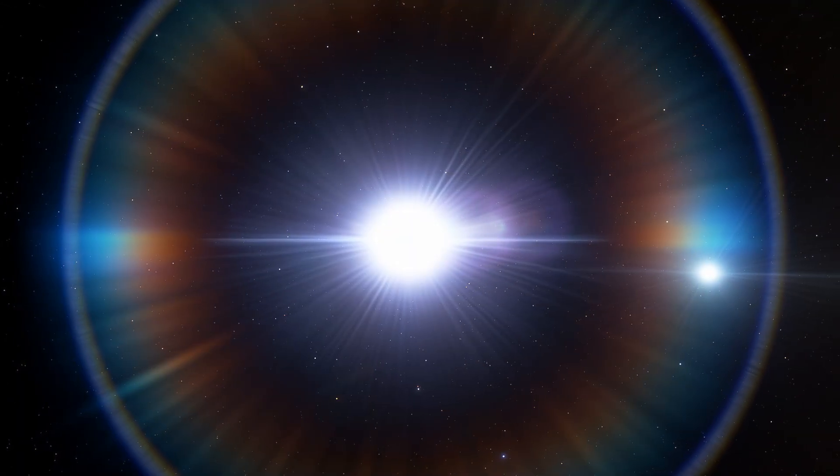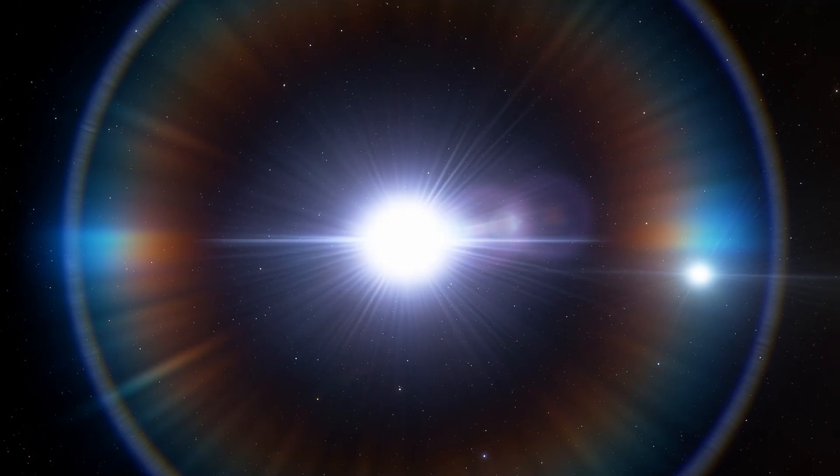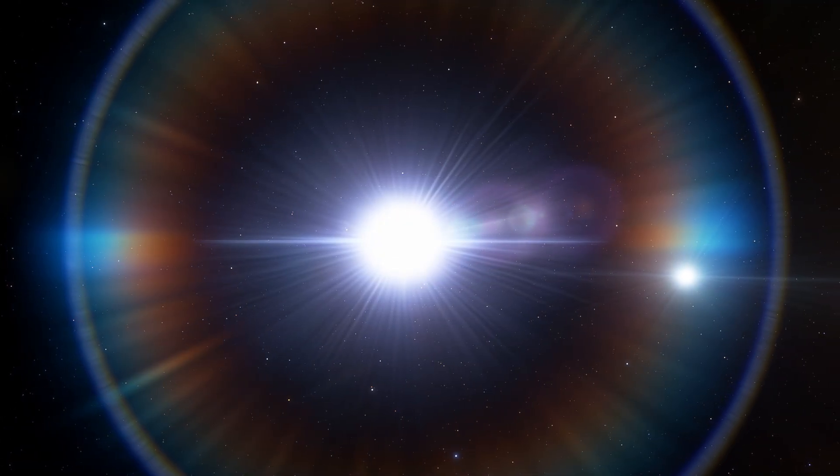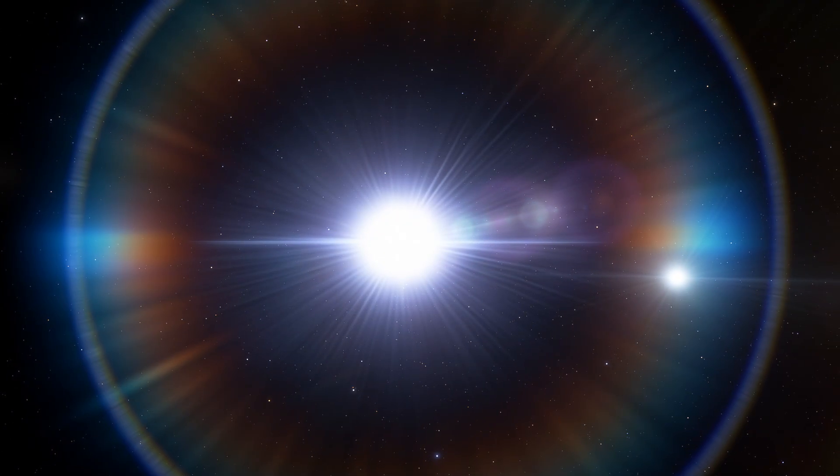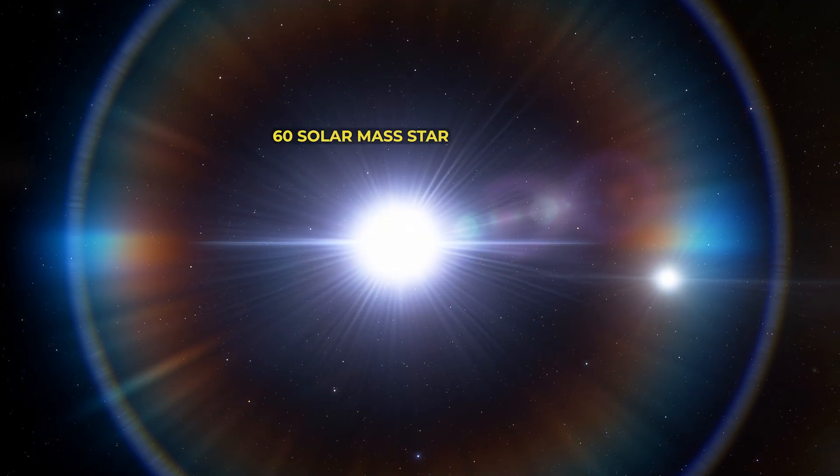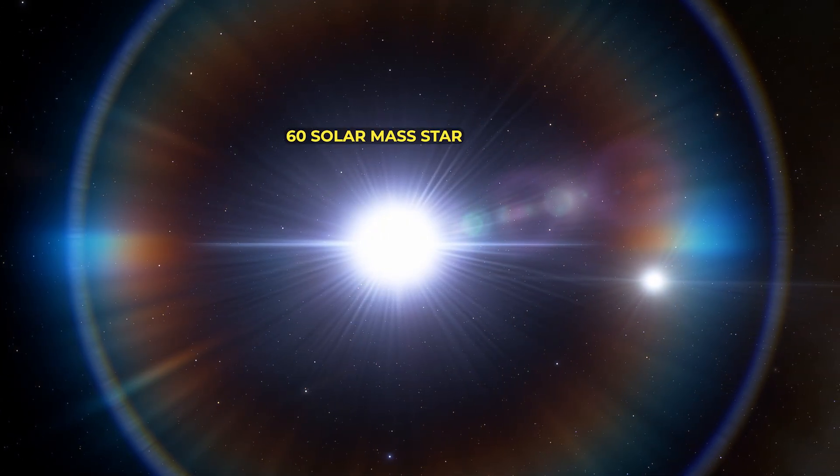Now, heavier stars are not much different at first, except that they start out shining blue light. These stars live much shorter lives than our sun, with a 60-solar mass star living for only 3 million years.